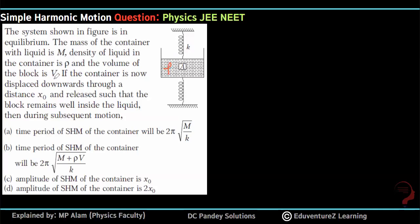Density of the liquid is rho and volume of the block which is in it is V. The container is now displaced downward through a distance x-naught. When pressed down, the spring will make it regain its position. It will go up, then down, and start oscillating up and down.